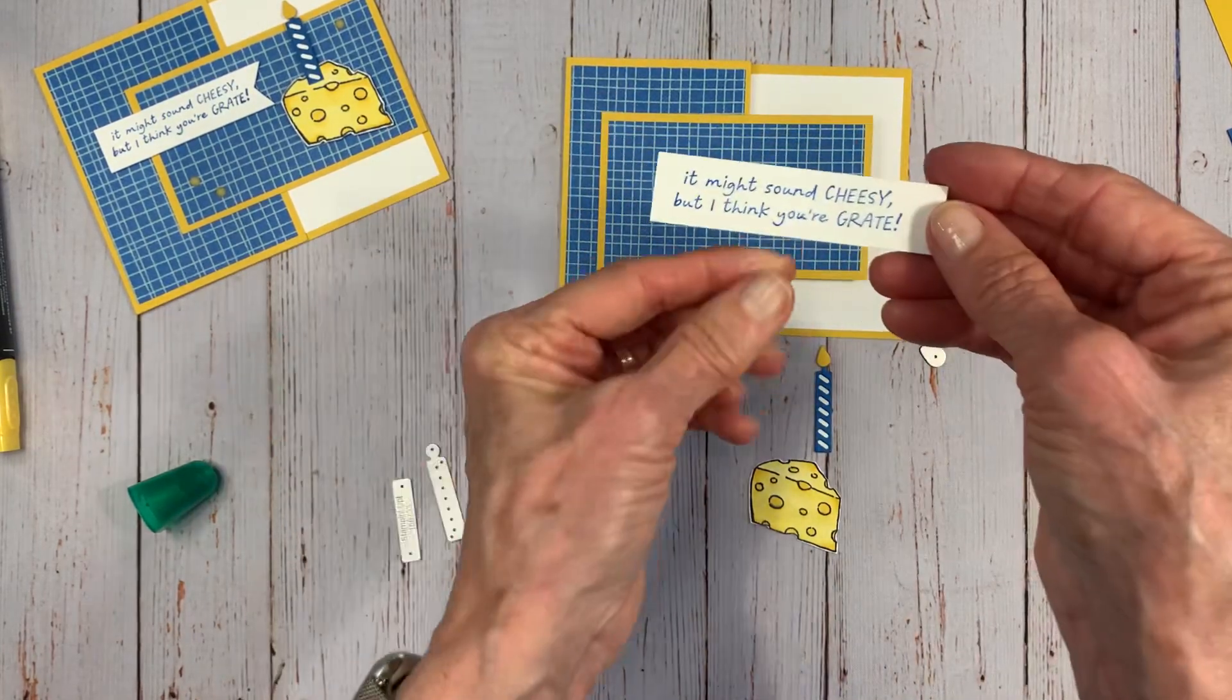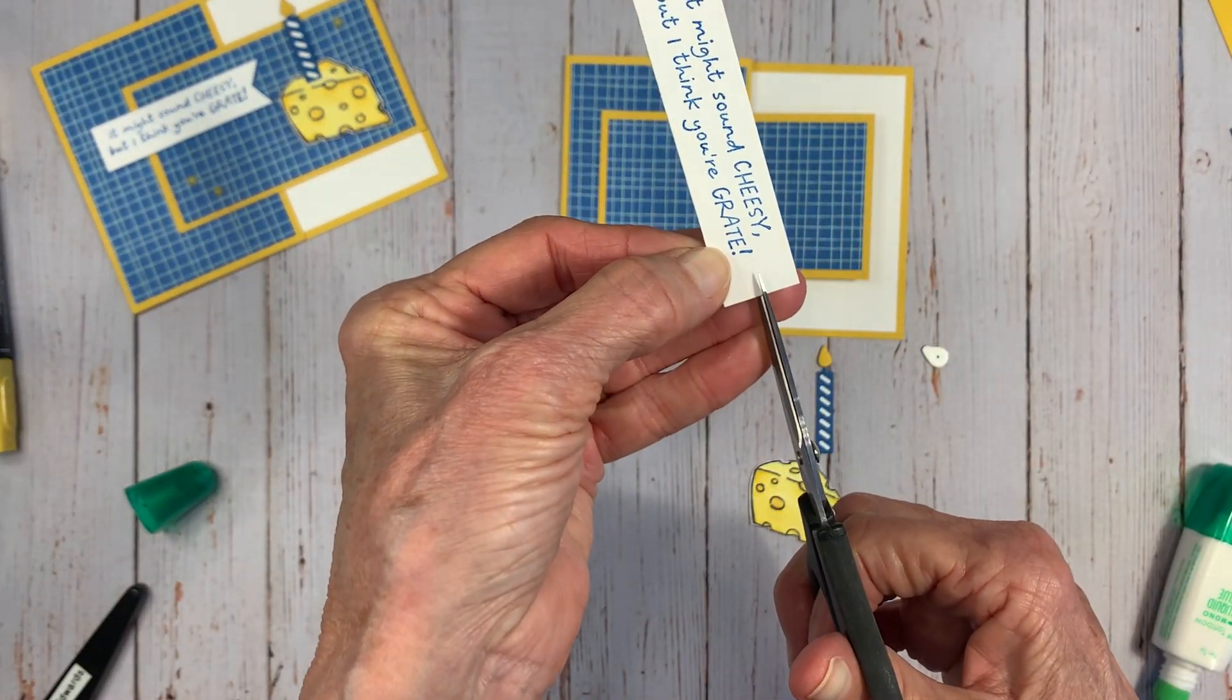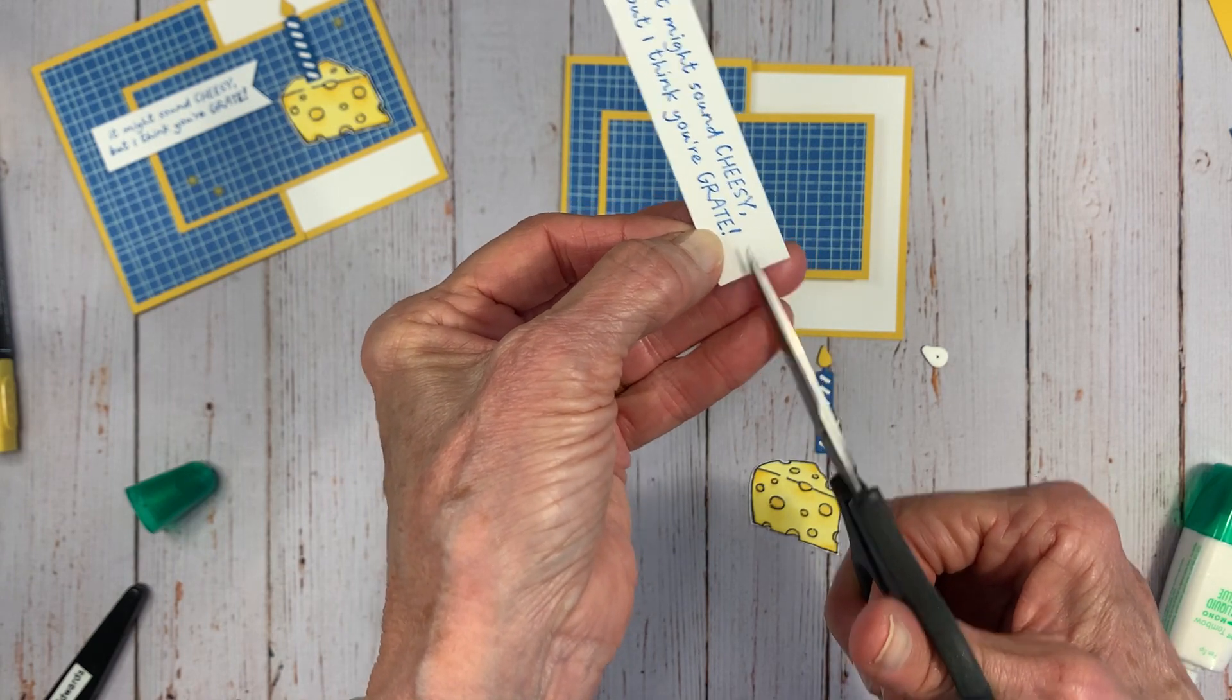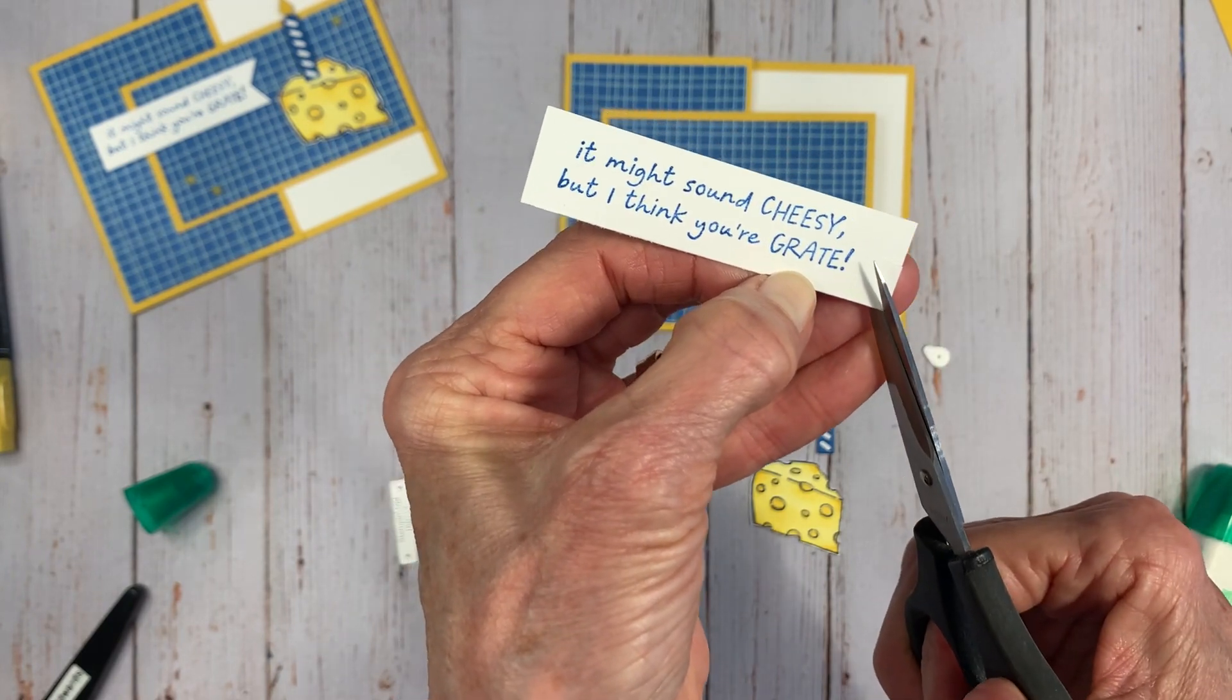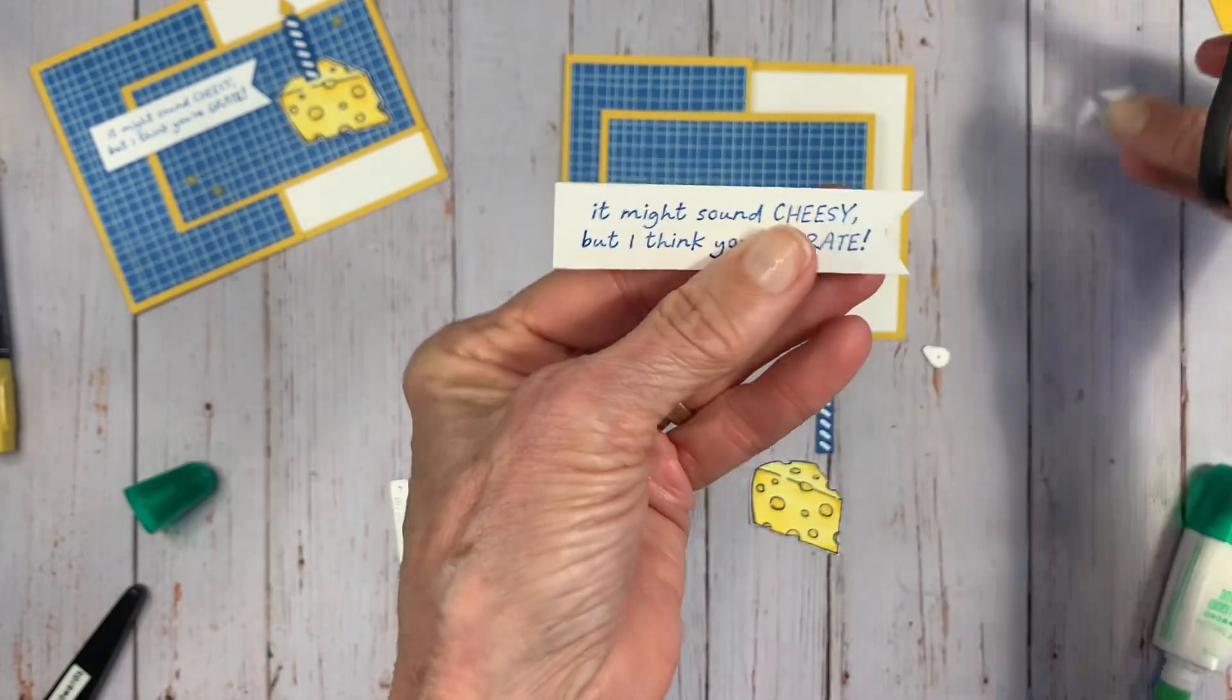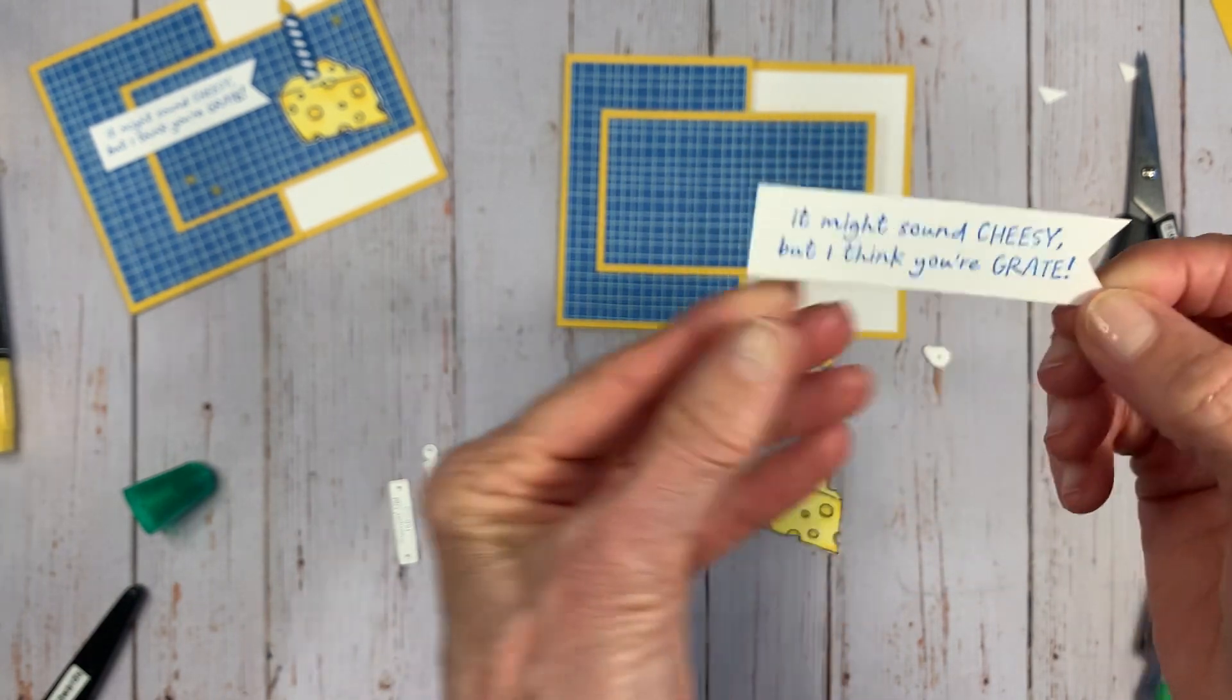So now let's finish off our sentiment. I am going to flag the end. If you've got one of the punches that flags the end, go ahead and use it. But just in case you don't, this is a really easy way to flag an end. I'm just kind of eyeballing the center, cutting to the center, and then I'm going to cut on an angle from one corner to the next. This is a great way. If you don't have a lot of tools, this is a great way to create some interest for your sentiment.